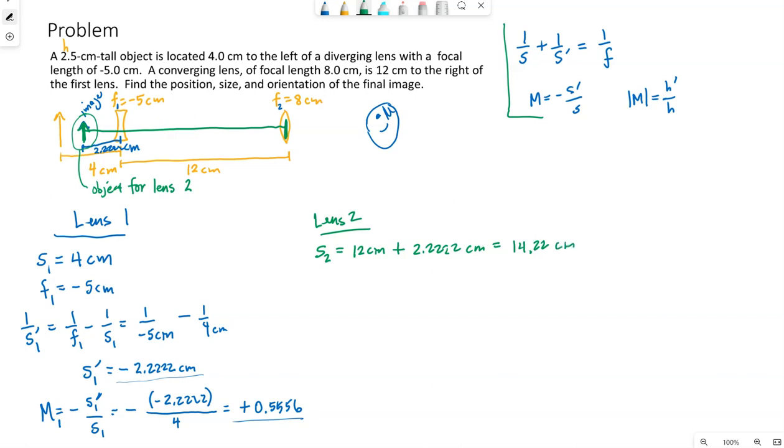So 14.222. I'm just going to keep a few of those. F2 was given. That's 8 centimeters. So we can find this image. I'm using the same equation I did before. But now I'm using values specifically measured for lens 2.